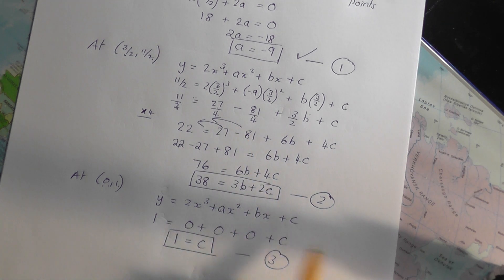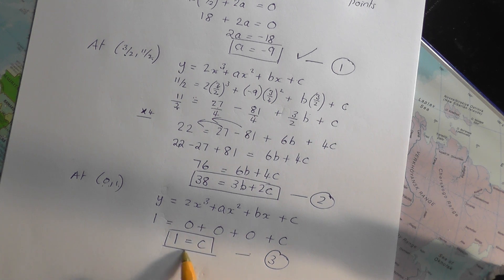So sometimes when you do this sort of thing, you'll get a statement coming out which has b and c involved in it and you need to solve these two equations simultaneously to get what b and c are. But not necessary here. Equation 3 gives you that c is 1 straight away.